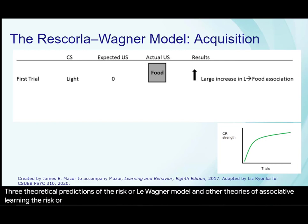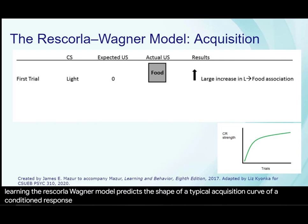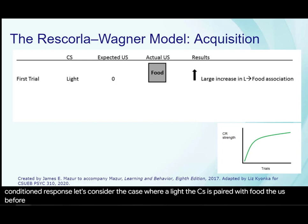The Rescorla-Wagner model predicts the shape of a typical acquisition curve of a conditioned response. Let's consider the case where a light, the CS, is paired with food, the US. Before the first trial, there's no expectation about the light, the food, or anything.